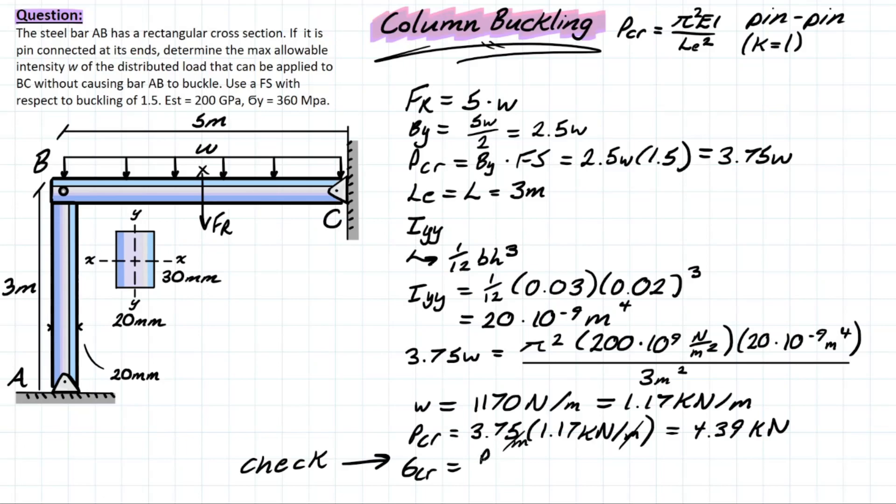Critical stress equals to Pcr over the area of the member. We have these numbers solved for already. We have 4.39, that's 10 to the 3, that's newtons on top. Then on the bottom we have the area of our member, simply 0.02 times 0.03, that's meters squared. Solving for that, you have 7.31 MPa, which is obviously much less than the yield stress of our member, or the yield strength, sorry.